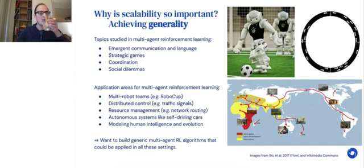Why do we care so much about whether this is scalable? It's another concept that starts with the letter G, which is generality. Multi-agent reinforcement learning is a huge field and it's growing every day. There's lots of different topics being studied: emergent communication and language, strategic competitive games, coordination problems, social dilemmas.